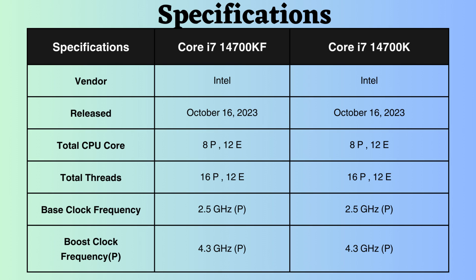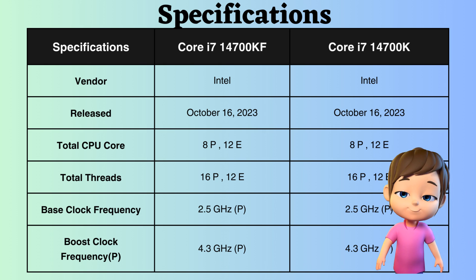Both of these processors were released on October 16, 2023. They each feature 8 performance cores and 12 efficiency cores, along with 16 performance threads and 12 efficiency threads. Having more cores and threads can result in improved multitasking performance, faster processing of multi-threaded workloads, and better utilization of hardware resources.